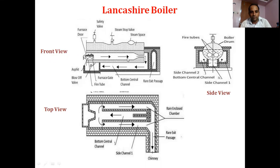Observing from the side view, the boiler shell looks like this. You can see here only one tube, and behind it is another tube of the same kind. You cannot see both in the front view, but from the side view you can see there are two tubes. These two tubes are submerged in water, and the same water level is shown here in the side view. The space above the water level is where the steam is being collected.